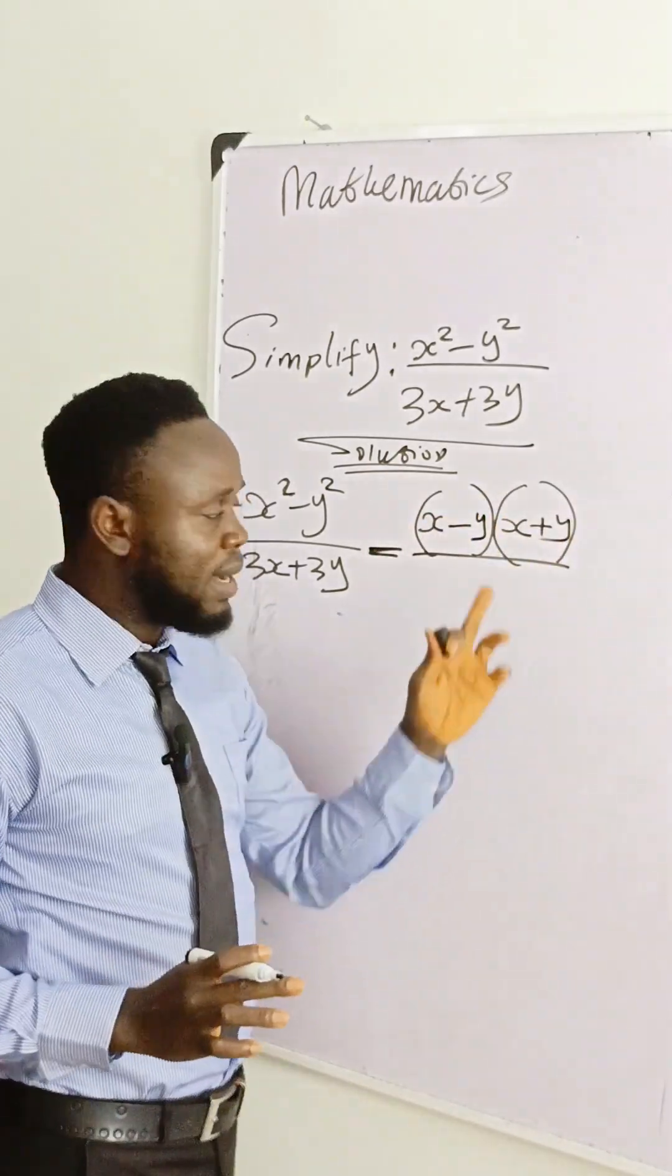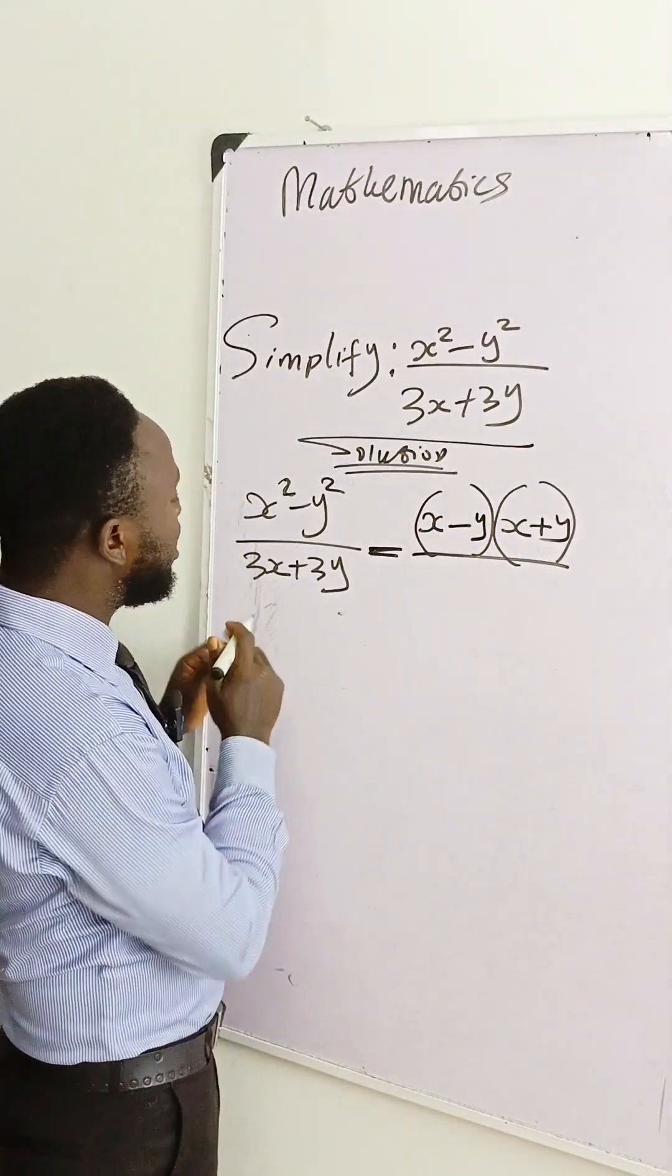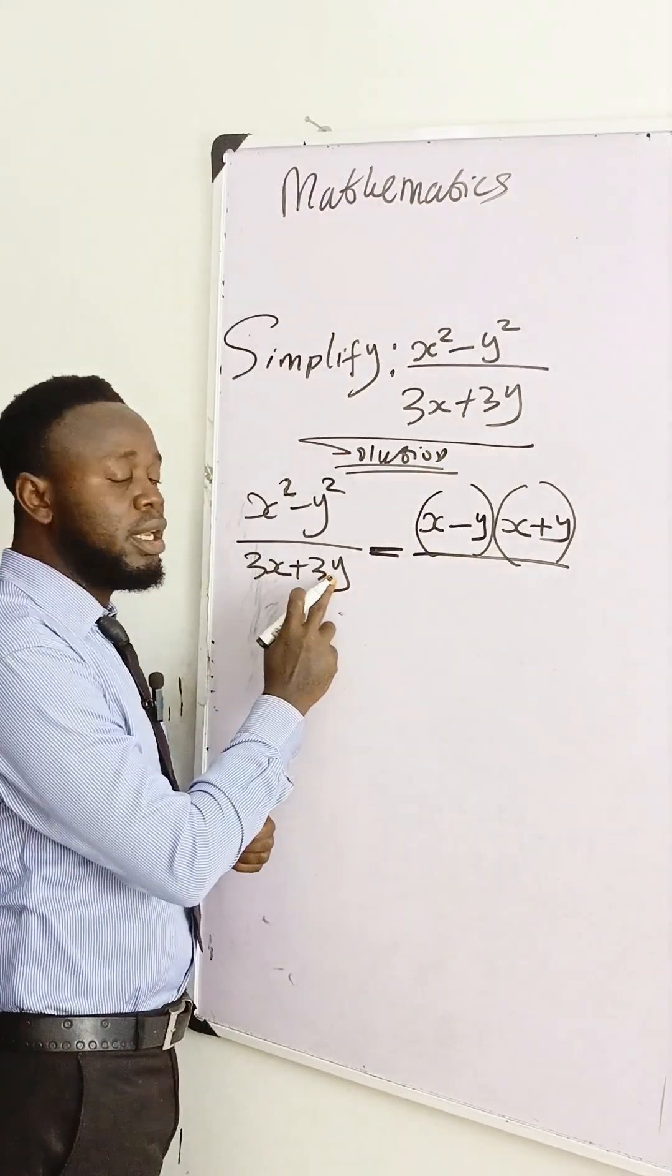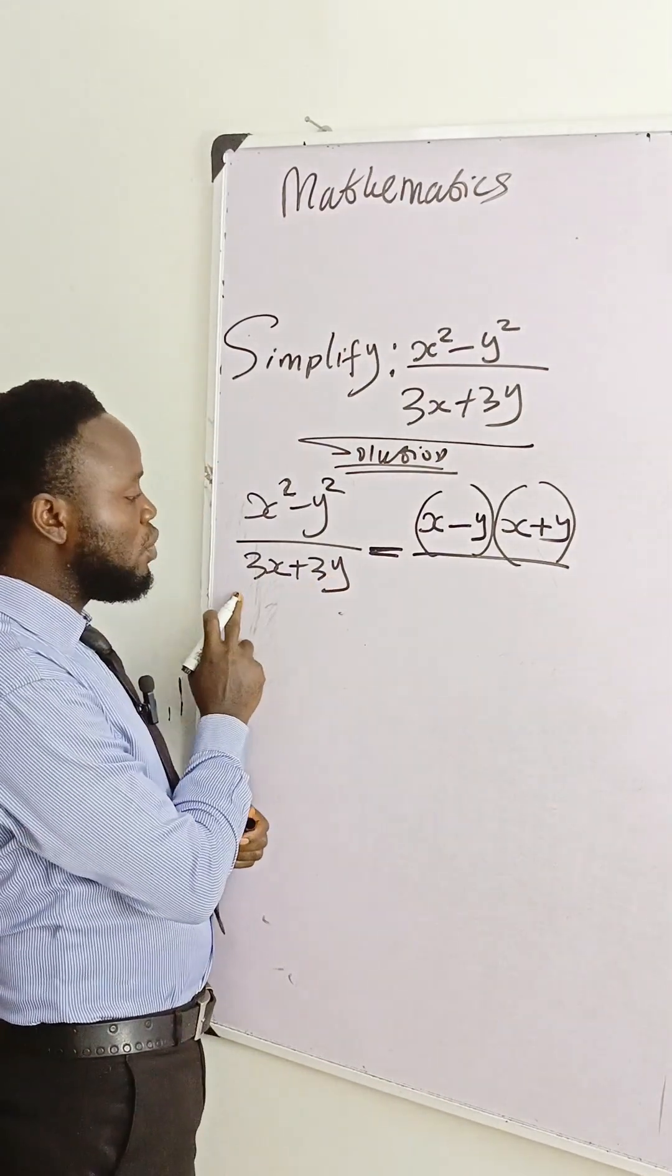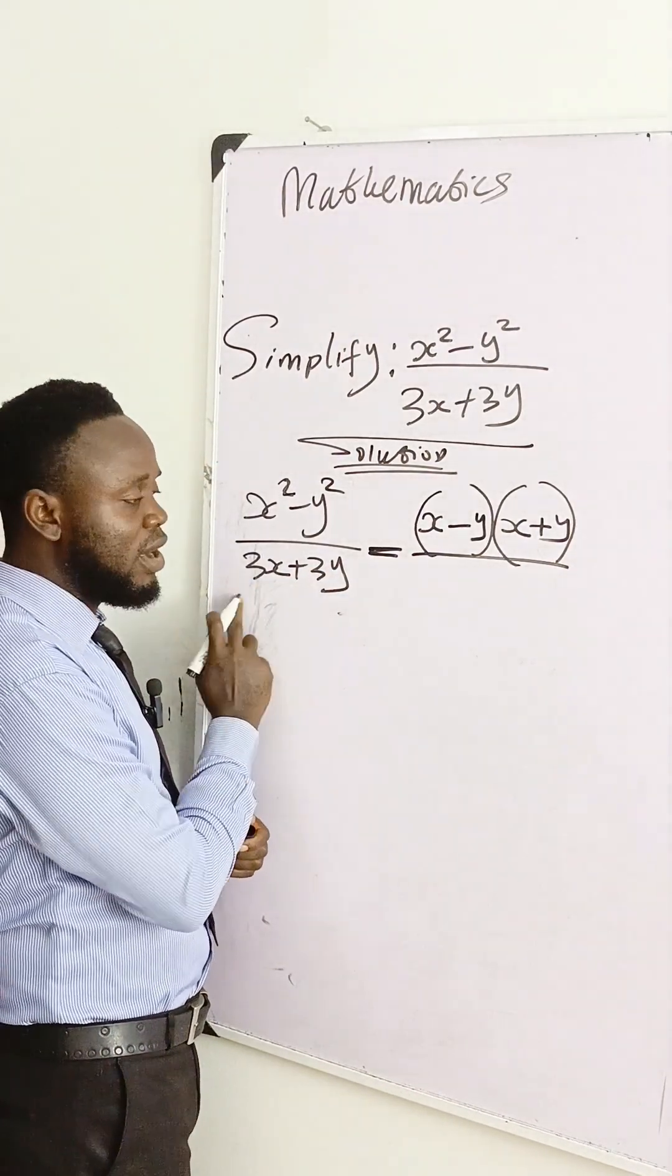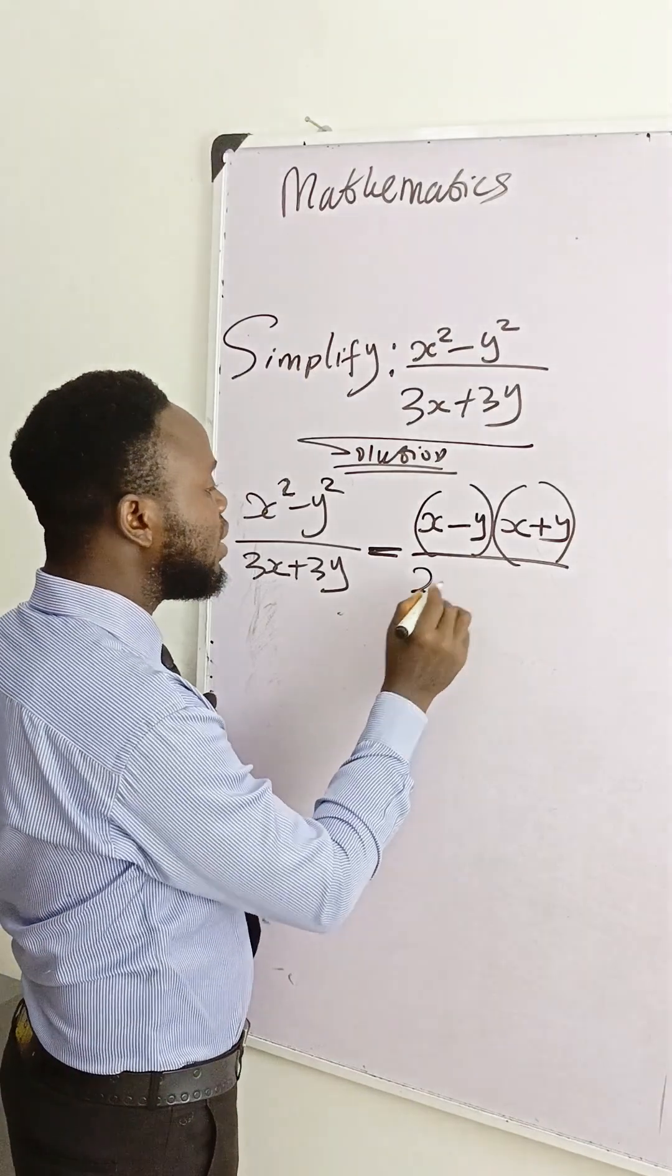Then we have expanded this one. Then you come here, you see 3x, you see 3y. The common factor is 3. Three can divide both of them, so you bring out 3 as a common factor.